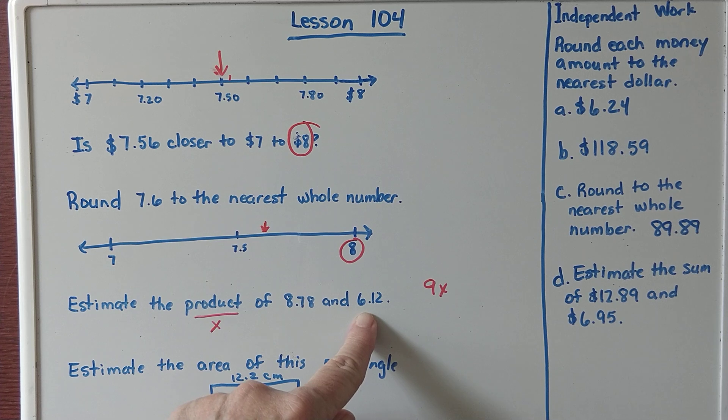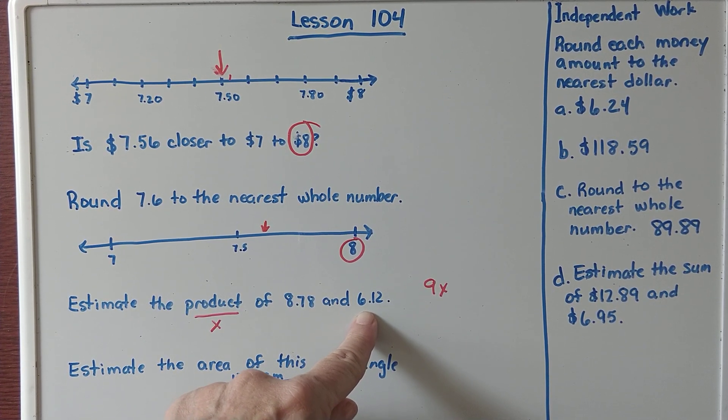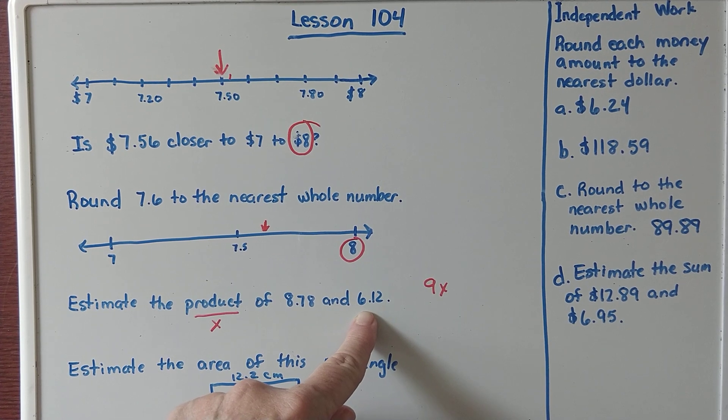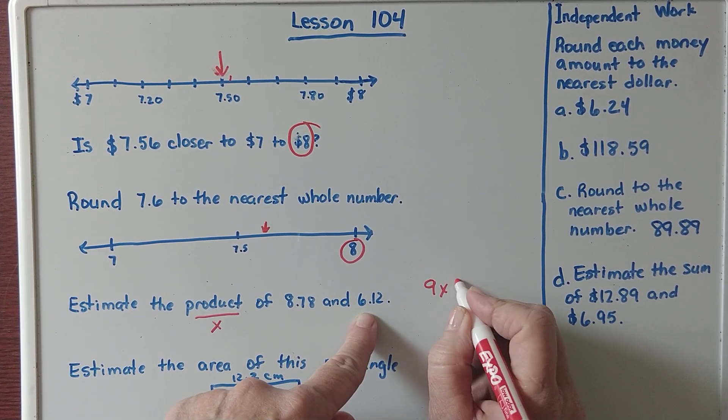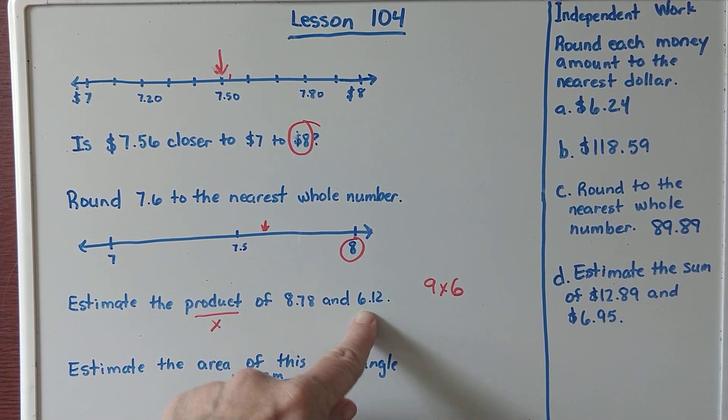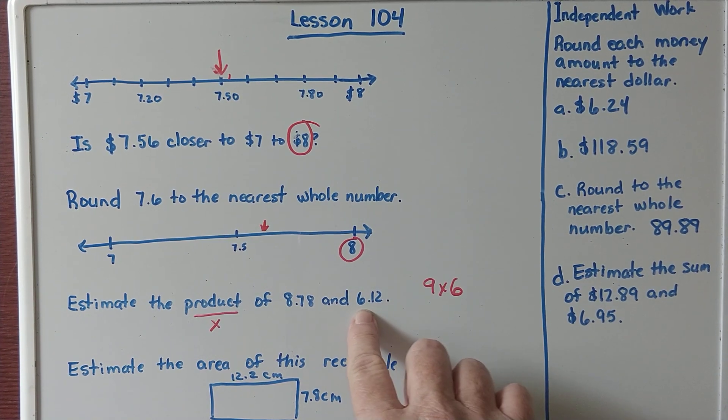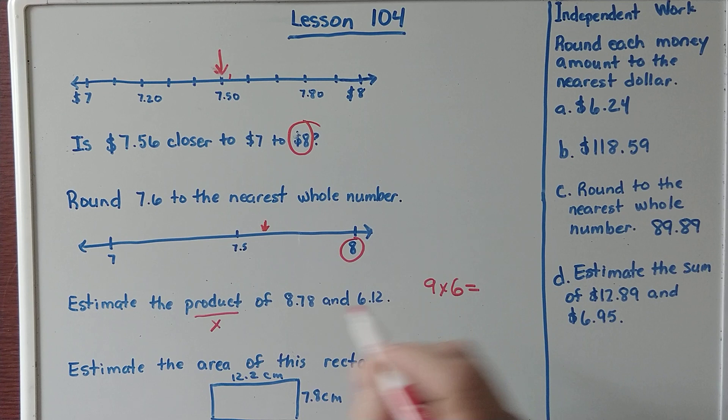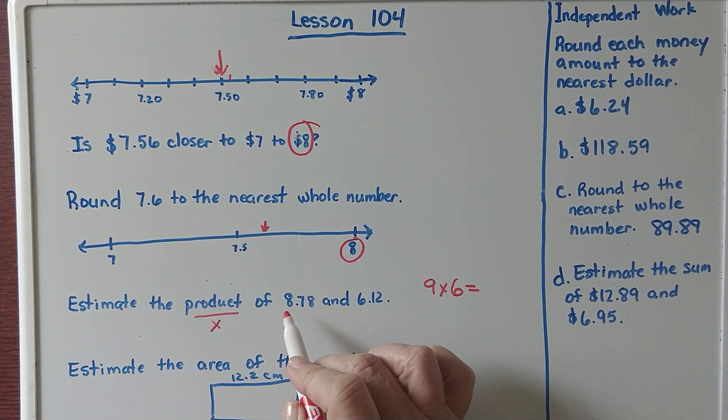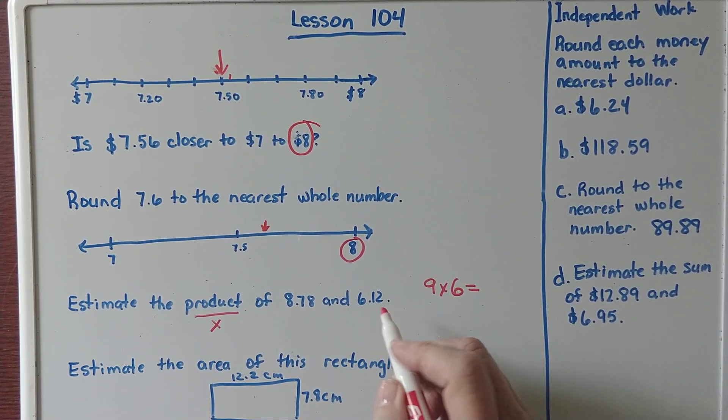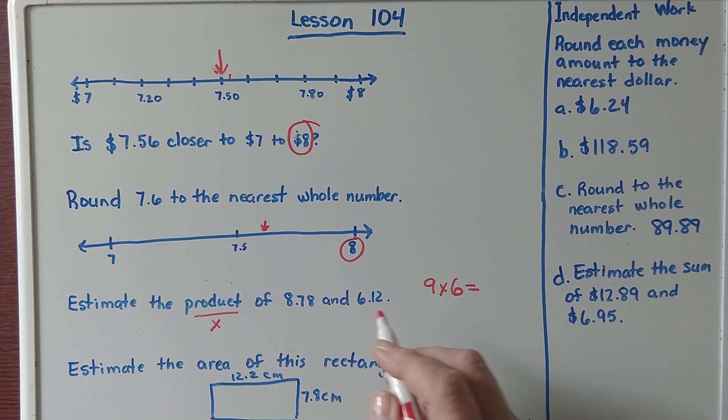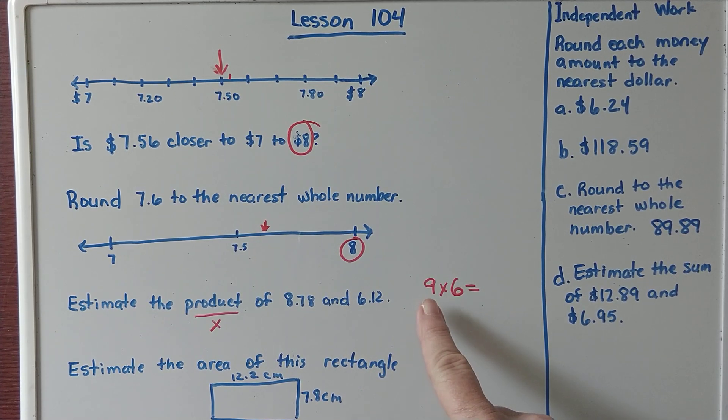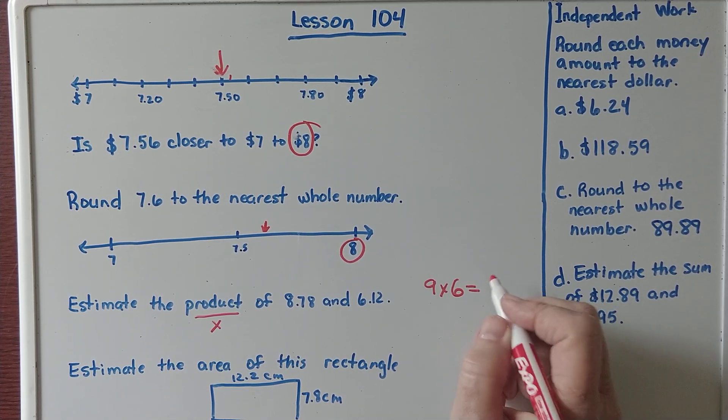And then what about 6 and 12 hundredths? Is that closer to 6 or closer to 7? We would say it's closer to 6 because it's not at 6 and 5 tenths yet. So if we are estimating the product of 8 and 78 hundredths and 6 and 12 hundredths, it would be 9 times 6, which is 54.